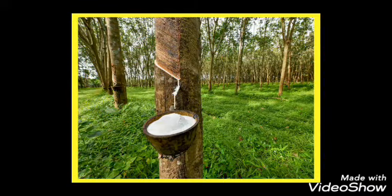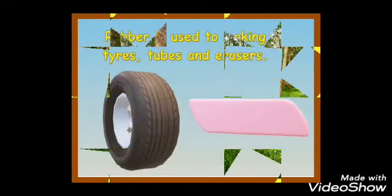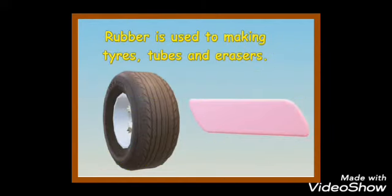Do you know what makes the ball bounce? It is because of the rubber used in it. We get rubber from the milky juice of the rubber tree. This milky juice is called latex. We use rubber to make tires, tubes and erasers.